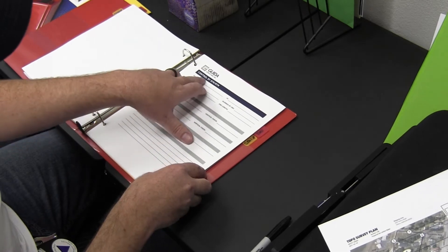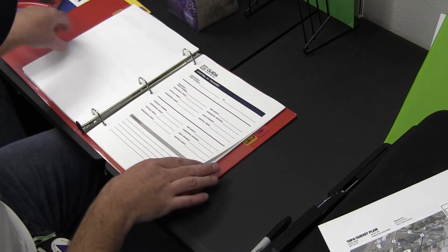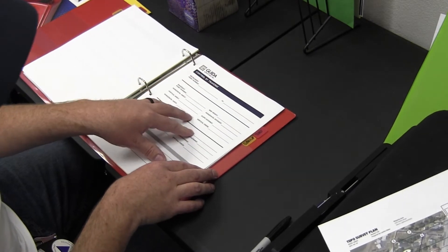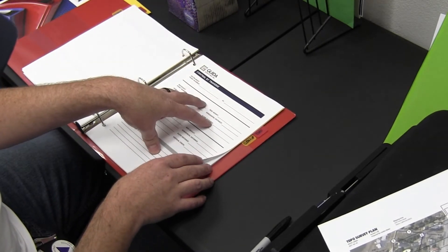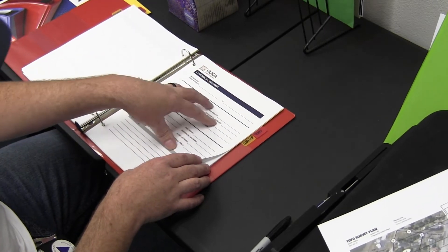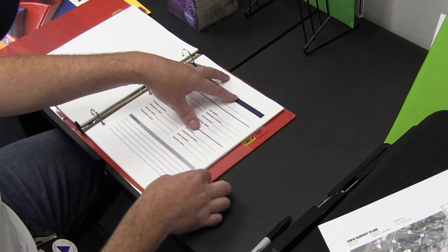I have a couple different sheets: this is for control by RTK/RTN, this is for control set by traverse with the total station. We're not doing static in this particular job, but if we do fast static, we have sheets for fast static observations in here as well.